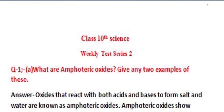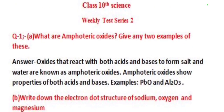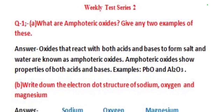Our first question is: what are amphoteric oxides? Give any two examples of these. Its answer is: oxides that react with both acids and bases to form salt and water are known as amphoteric oxides. Amphoteric oxides show properties of both acids and bases. Examples: lead oxide (PbO) and aluminium oxide (Al2O3).